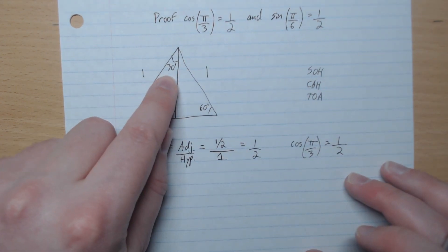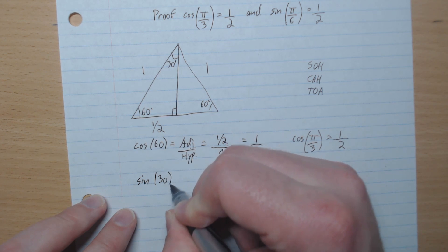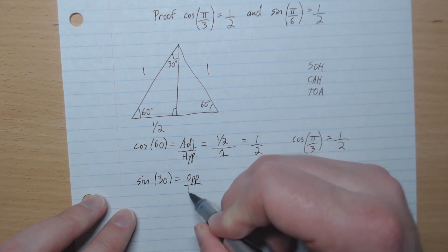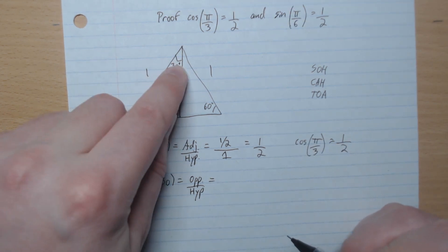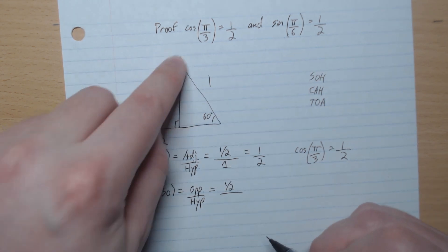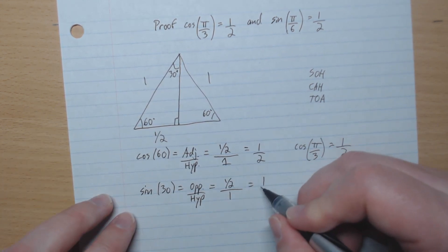And then next we're going to look at the sine of this angle here. So sine of 30, SOHCAHTOA, so opposite over hypotenuse. So the opposite of 30 here is a half, and the hypotenuse is 1. So sine of 30 is a half.